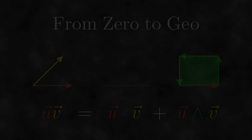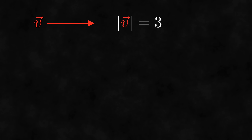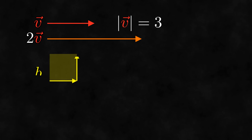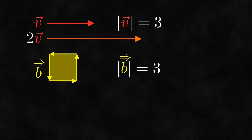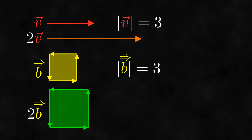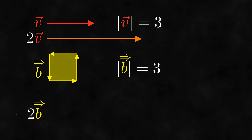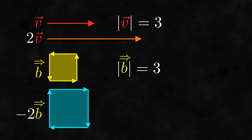The first operations on bivectors that we will look at should be pretty simple. Remember that with vectors, we can find their magnitude and scale them. We can do the same things with bivectors. We can find their magnitude, which is just the area, and we can also scale them, which produces another bivector with the same orientation but a different area. Like with vectors, we can also scale bivectors by a negative number, which will change the magnitude while also flipping its orientation.